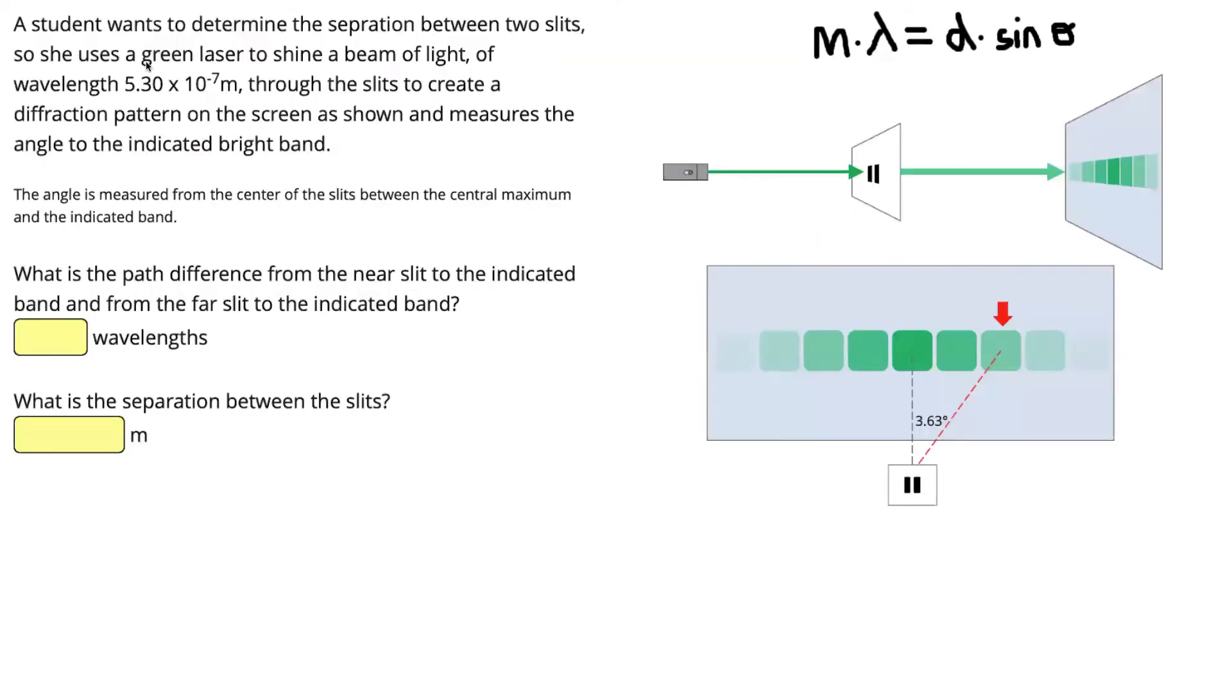In this question, we have a student who wants to determine the separation between two slits. So you can see we've got two slits that the light is shining through. She shines a green laser beam of wavelength 5.30 times 10 to the negative 7 meters through the slits to create the diffraction pattern shown.